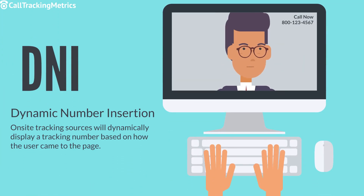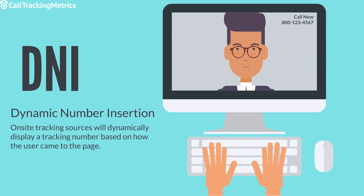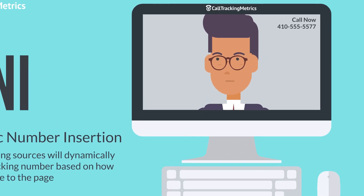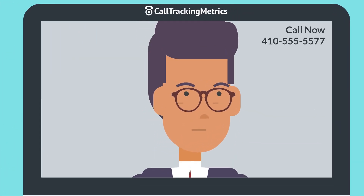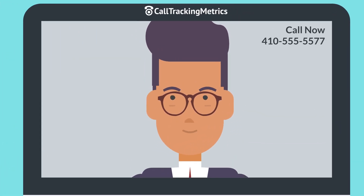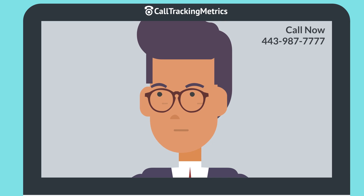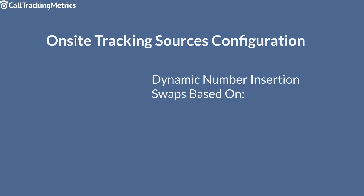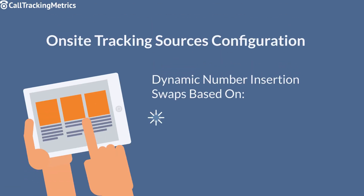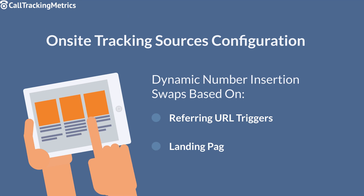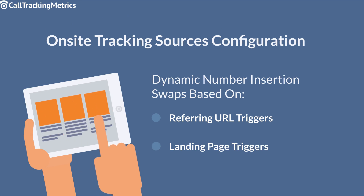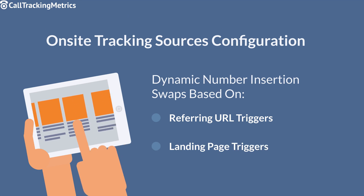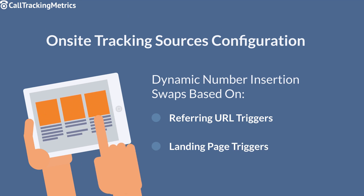On-site tracking sources use dynamic number insertion, which is commonly referred to as DNI. Dynamic number insertion will replace the phone number on your website with a tracking number based on how the user came to the page. On-site tracking sources will trigger the swapping of the phone number based on either the referring URL or by the landing page.